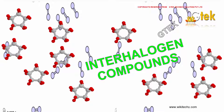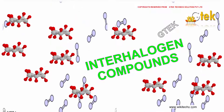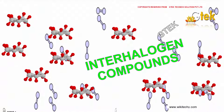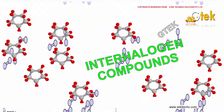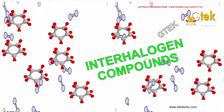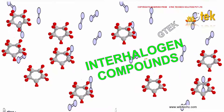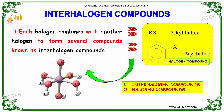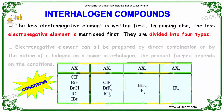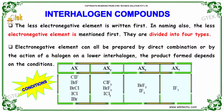Here are the interhalogen compounds. We are going to look into what interhalogen compounds are and their properties. In naming, the less electronegative element is written first — the less electronegative element is mentioned first.